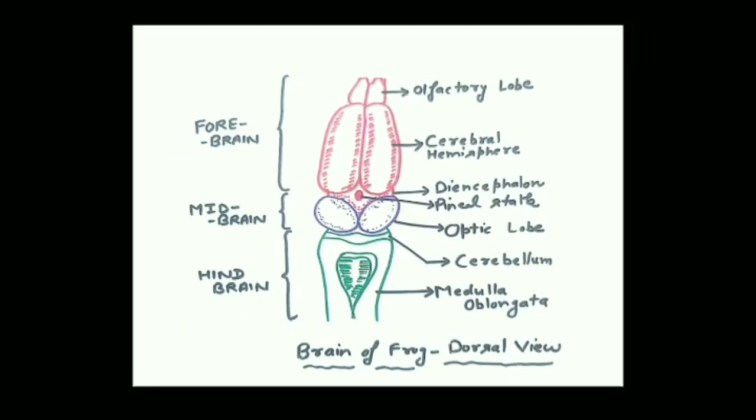Externally, the olfactory lobes are small structures present just above the cerebral hemispheres. The cerebrum is made up of two oval cerebral hemispheres whose surface is smooth — unlike the highly folded cerebral hemispheres of the mammalian brain. The two hemispheres are separated by a median groove or longitudinal groove. Diencephalon shows the pineal stalk. The cerebellum is poorly developed and appears just like a transverse band below the optic lobe, and medulla oblongata finally changes into the spinal cord.